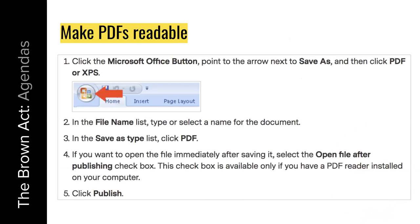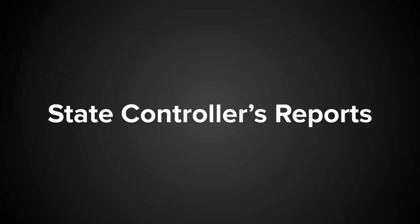A quick tip: depending on your version of Office, you go to 'Save As,' select file type, and it lets you save as a PDF or XPS. Save it that way and that becomes your agenda. You can still print it out and include it in your packet — that's fine. AB2257 only applies to the agenda itself, not to the minutes or the agenda packet, so don't be scared by that.